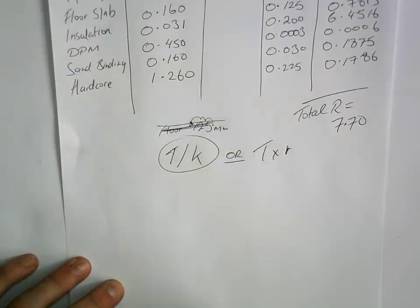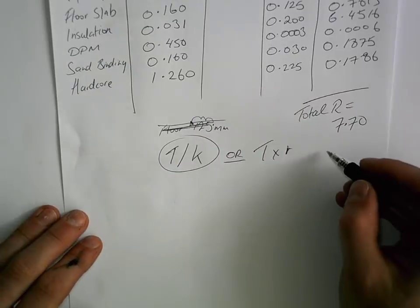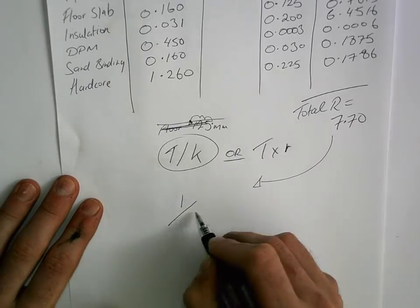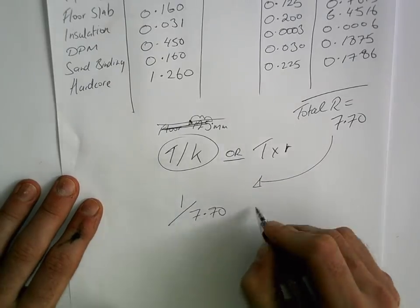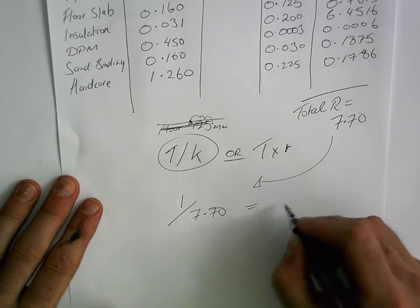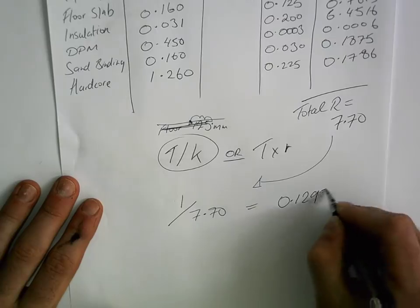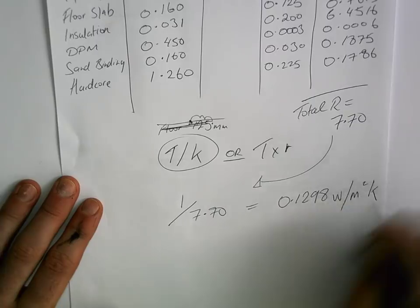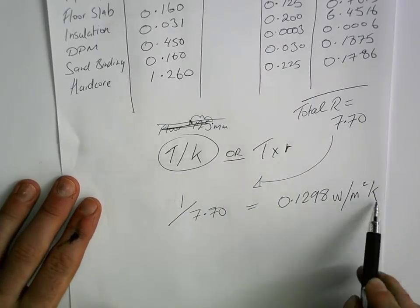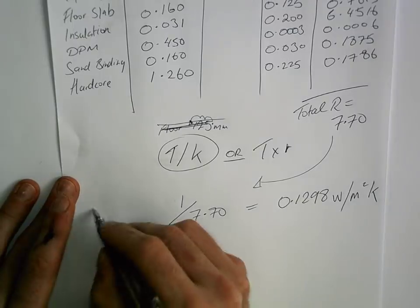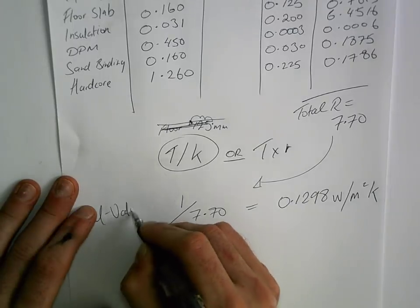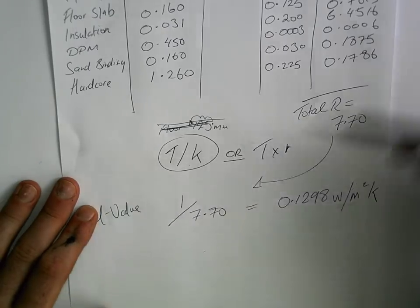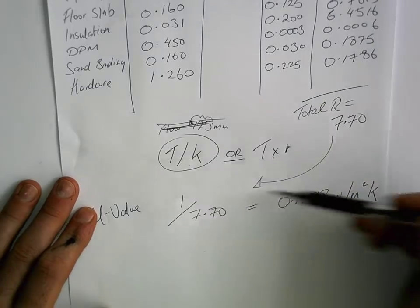The last stage of calculating your U-value is to take your total resistance and divide it into one. So that's 1 divided by 7.70, which gives a U-value of 0.1298 watts per meter squared degrees Kelvin. Make sure you include those units to get full marks. Learn those two formulas, total your resistances, divide into one — that's your answer.